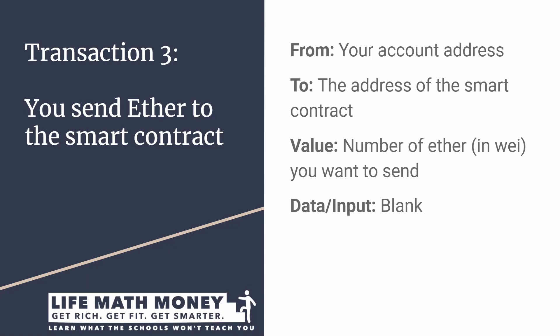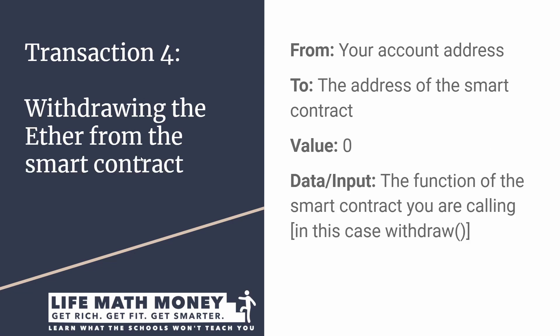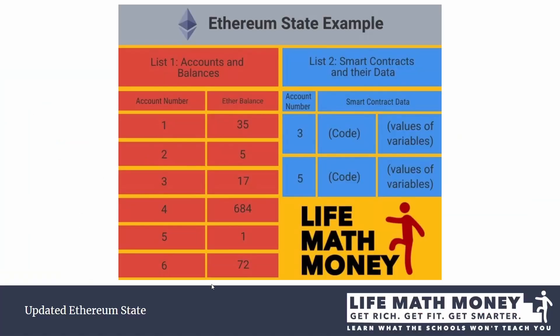The third transaction is straightforward — you send Ether to that smart contract account. The 'from' is your account address, 'to' is the smart contract's address, the value is the amount of Ether in Wei, and the data input is blank. The state will update: your balance will reduce and the contract account's balance will increase.